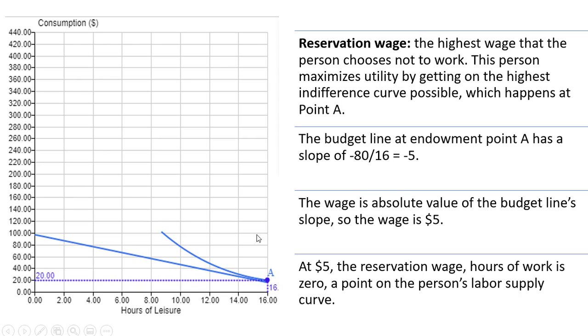It's downward sloping, so it's negative. The slope of this budget line is minus 5, and as we know, the wage is the absolute value of the budget line slope. So in this case, the wage is $5. At $5, which is the reservation wage, hours of work is 0. That is going to be a point on the person's labor supply curve.